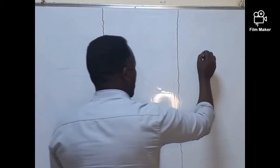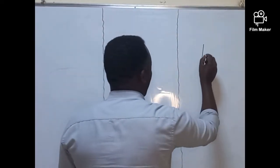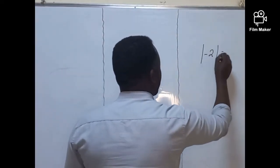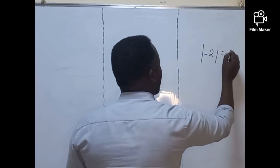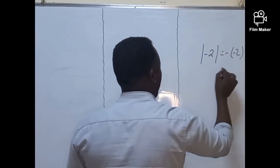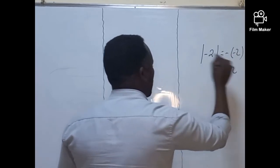The absolute value of negative two. This is the negative one, minus two, this is the negative one.